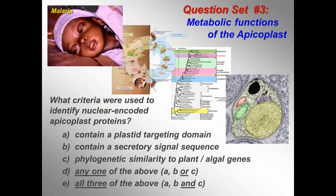With this, I'd like to raise a couple of questions. Question set 3 includes the following. Question 3.1: What criteria were used to identify nuclear-encoded apicoplast proteins? Did they: A — contain a plastid targeting domain? B — contain a secretory signal sequence? C — exhibit phylogenetic similarity to plant and algal genes? D — display any one of the above? Or E — all three of the above, A, B, and C?